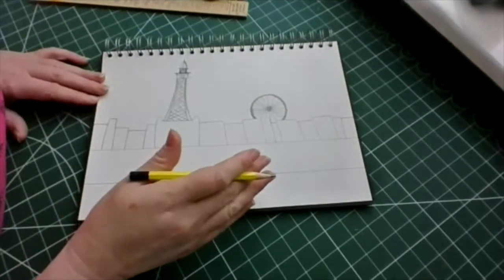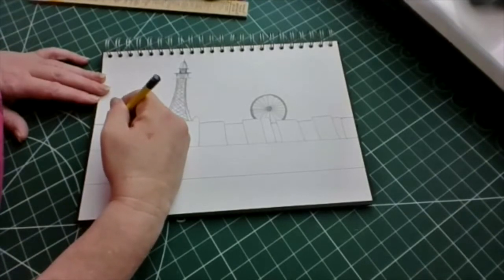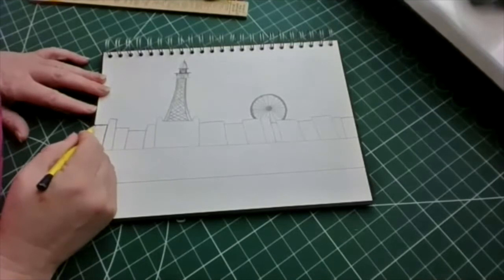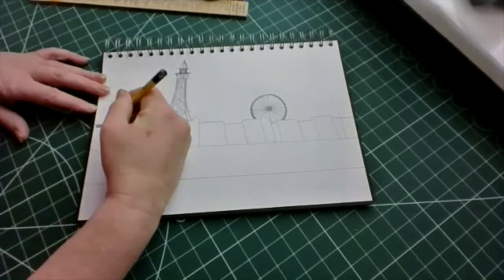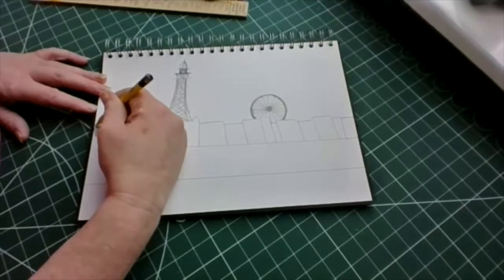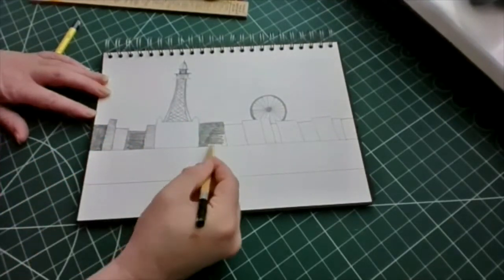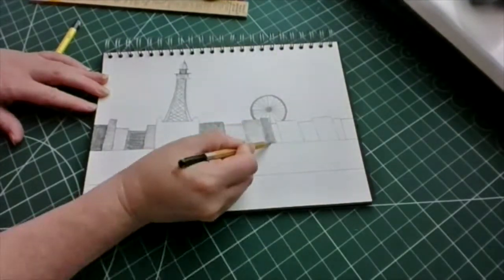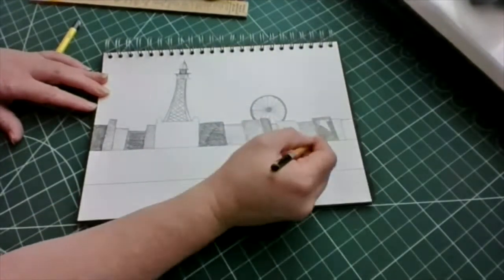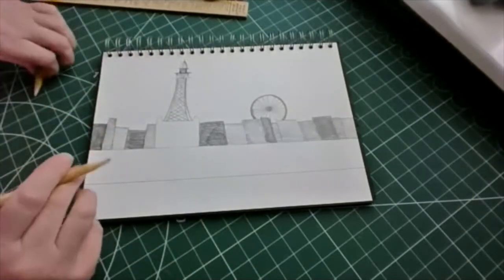We're going to shade the buildings. So we need to just put some light shading on some and some darker shading on the others just to give it a bit more interest. There we go. All shaded in, apart from the tower.